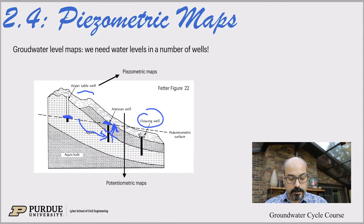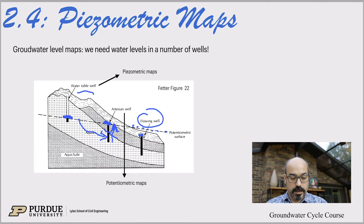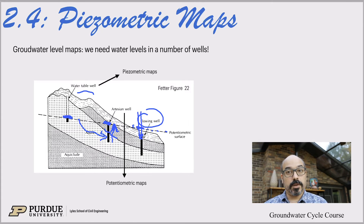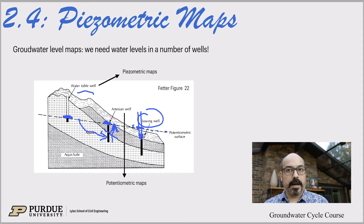If you have a flowing well, you don't really know where the potentiometric surface would be because you're flowing water. You would have to raise the well up to find that stable level. But basically, you poke holes in the landscape, measure the piezometric head, and then you can map out the contours of the aquifer.